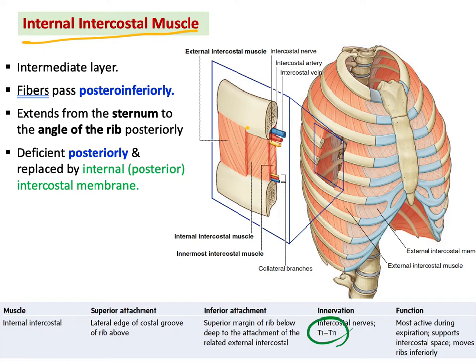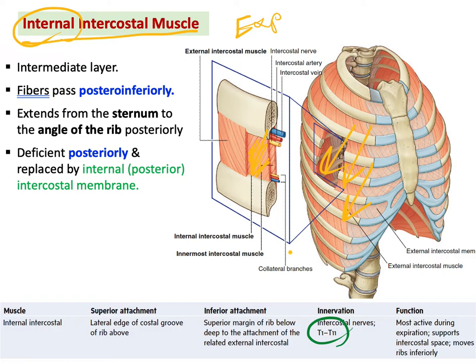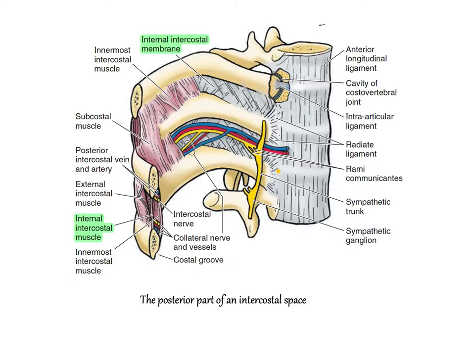The internal intercostal muscle is opposite to the external by both fiber direction and function. The internal intercostal is very active during expiration. Because of the direction of its fibers, it pulls the ribs inferiorly — moving the ribs down — and for that reason it is mostly active during expiration.